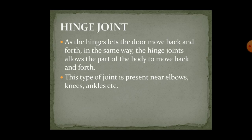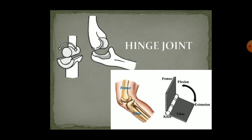The next is the hinge joint. Hinge joint is like the hinges present in a door — it attaches the door and allows movement only back and forth. In the same way, the hinge joint allows our body parts to move only back and forth, and these are usually present near the elbows, knees, and ankles. As you can see in the picture, the hinge is compared to the joint present in the knee. Even if you try, you cannot move your lower leg above the knee — you can at most straighten your leg. That is what hinge joint means.